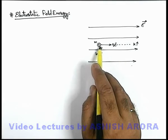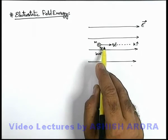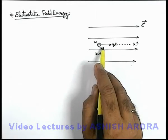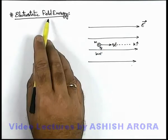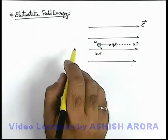That indirectly implies that field must possess some energy with which it is able to do work. That energy we actually call electrostatic field energy, which actually resides in the region where electric field exists.